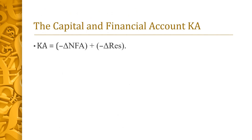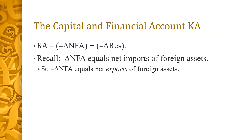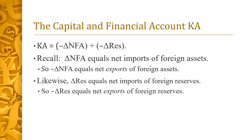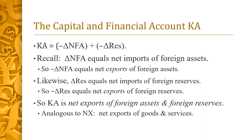Combining the third and fourth building blocks, we obtain the capital and financial account, denoted KA. It is defined as the sum of minus delta NFA and minus delta RES. Recall that delta NFA is a country's net imports of foreign assets, so minus delta NFA can be thought of as its net exports of foreign assets. Likewise, minus delta RES equals its net exports of foreign reserves. Accordingly, KA can be thought of as net exports of foreign assets and foreign reserves — the analog, for the case of assets, of NX.